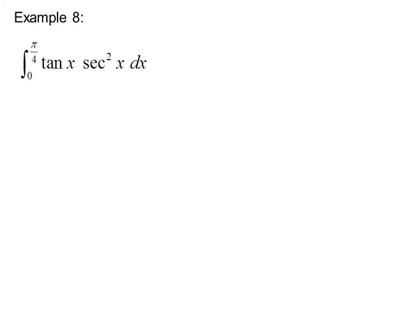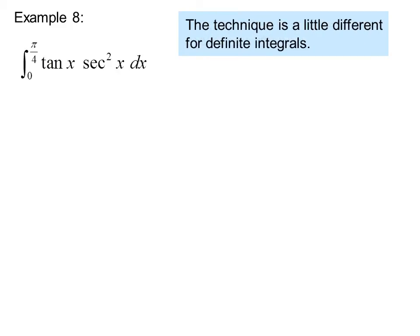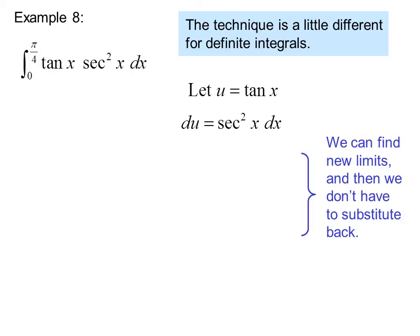Integral from 0 to pi over 4 tangent x secant squared x dx. The technique is a little different for definite integrals. Let u equal tangent x. Du equals secant squared x dx. We can find new limits and then we don't have to substitute back. u of 0 is the tangent of 0, which is 0. u of pi over 4 is the tangent of pi over 4, which is 1.